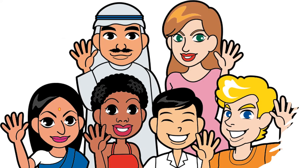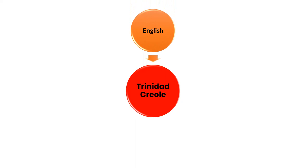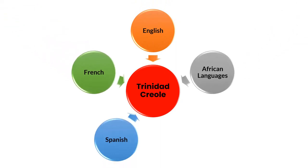Over time, many people from different countries speaking different languages have settled here and had to find common ways to communicate. This led to the emergence of a new language, the Trinidad Creole, which is mainly English-based but also contains elements from a number of languages like French, Spanish, a variety of African languages, and Trinidad Bojpuri or Hindustani.